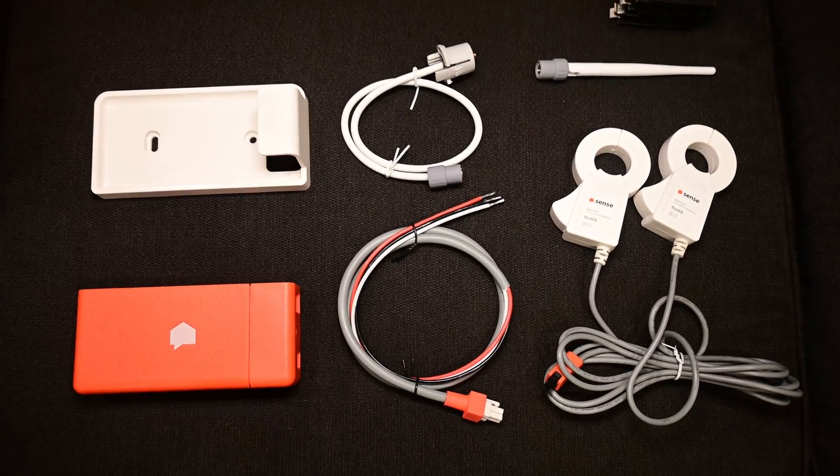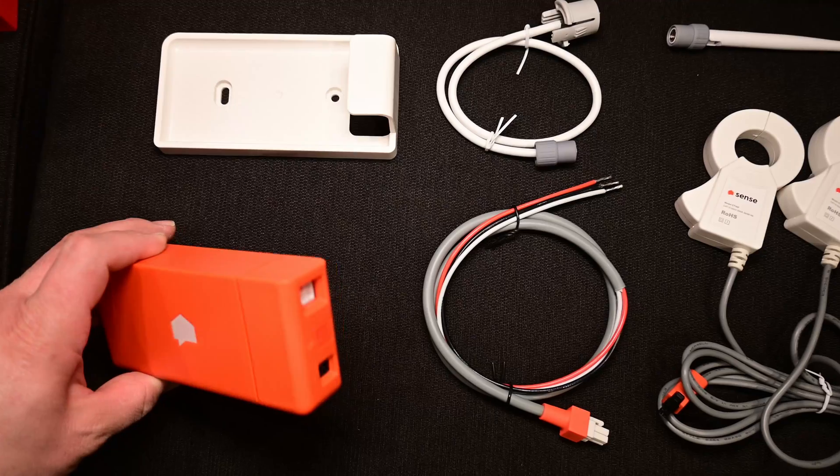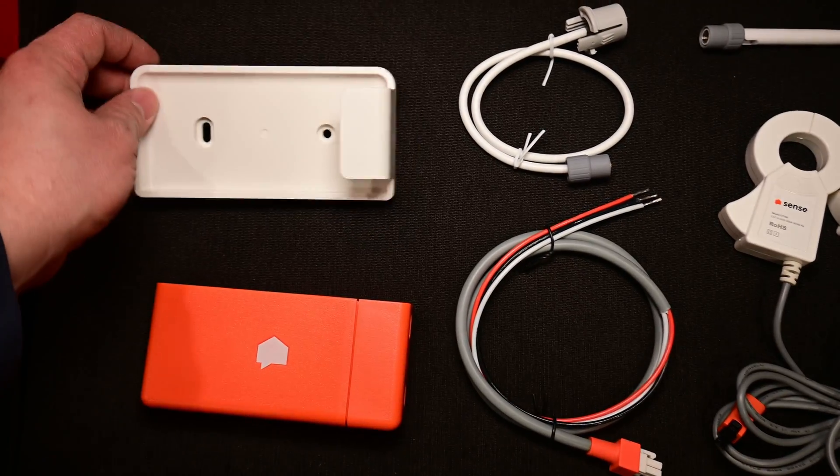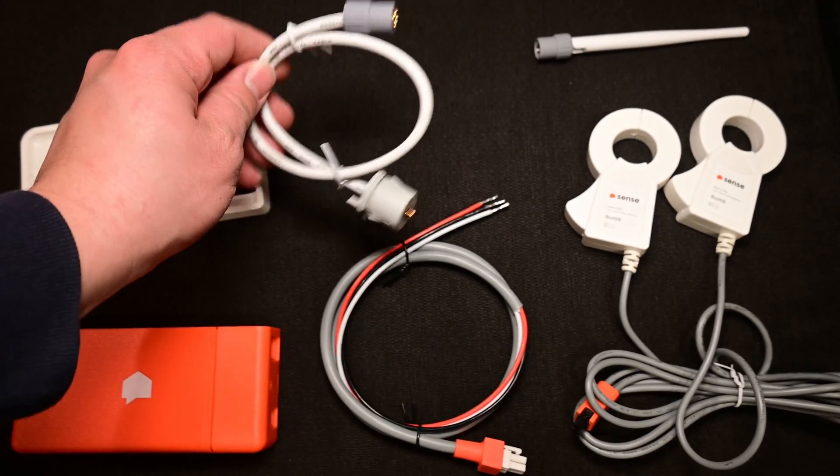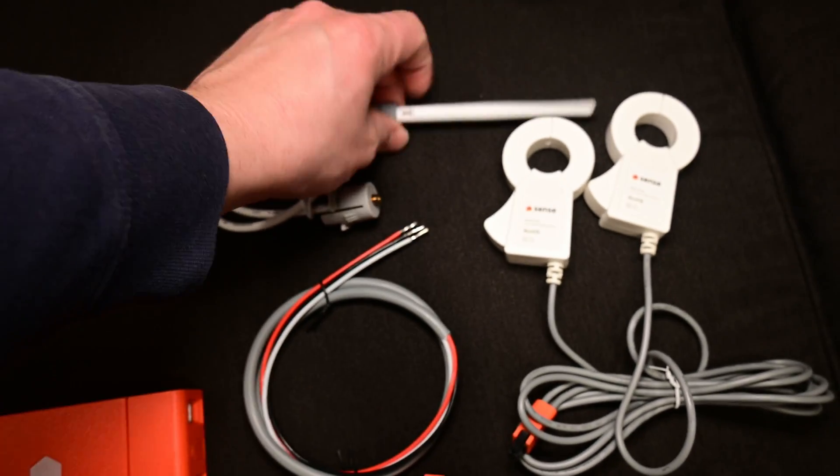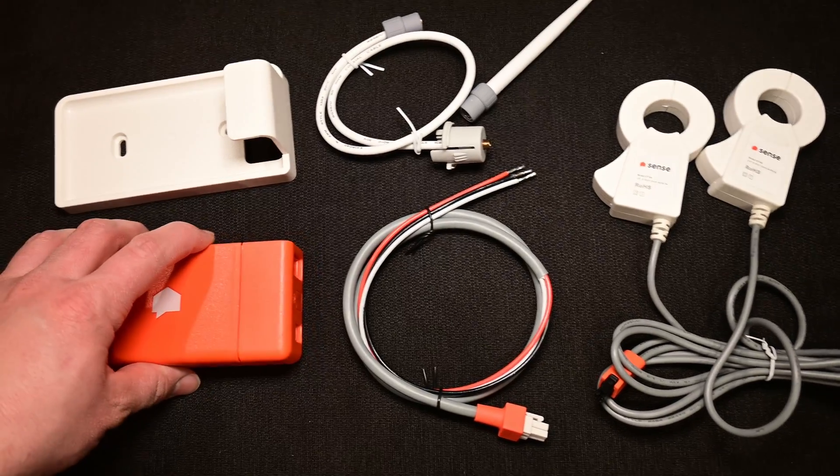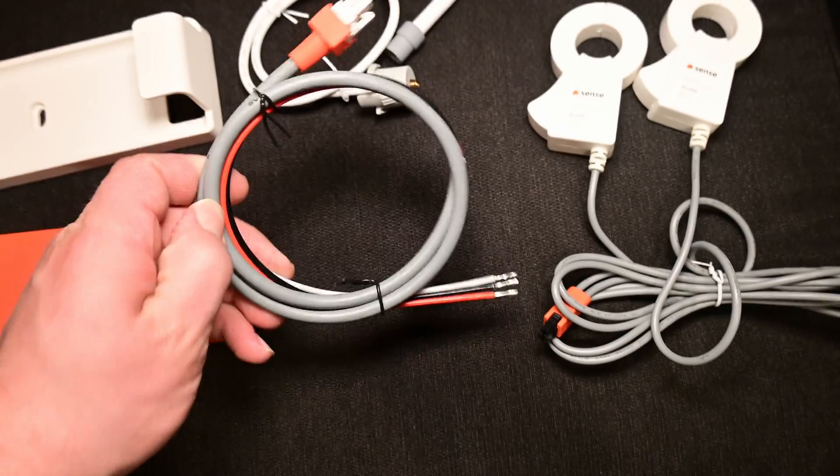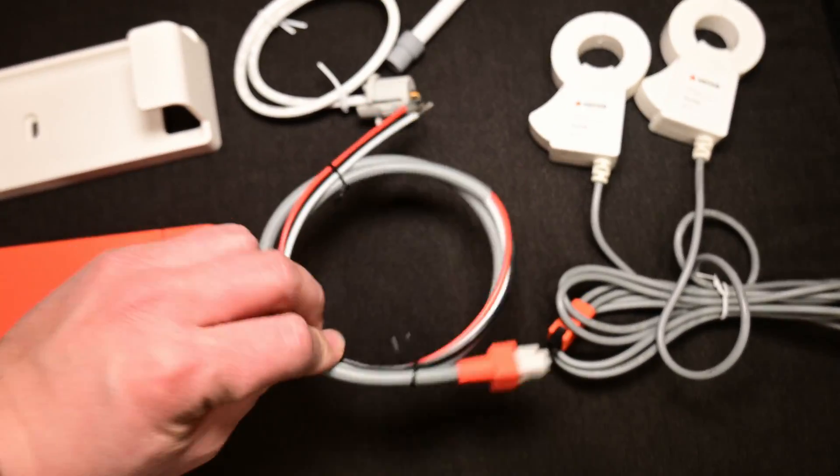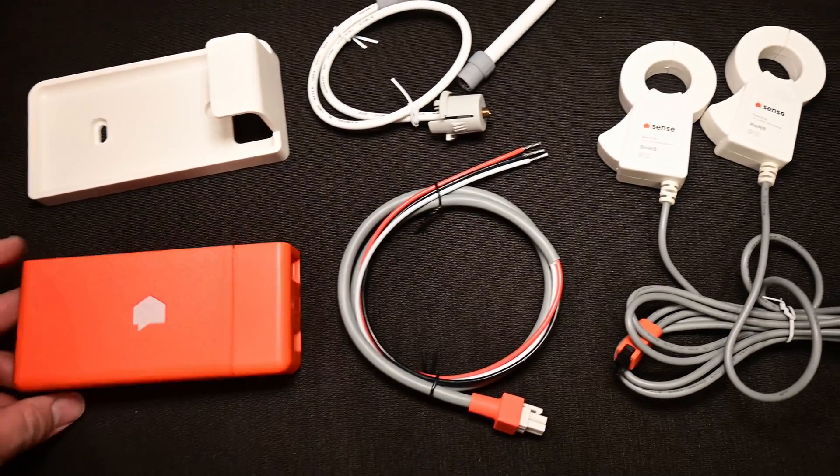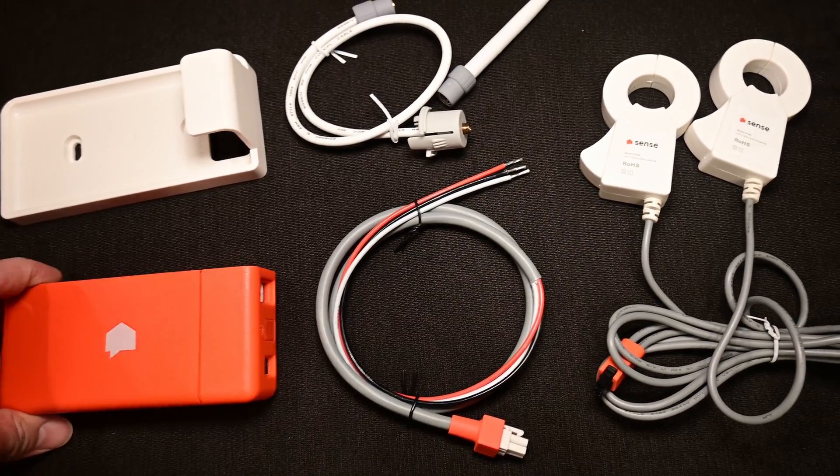These are the parts that are included with it. This right here is the Sense Energy Monitor itself, along with the mounting bracket that you will likely not need to use. Here is the connector for the extension of the antenna, which you're going to use so that your Sense Energy Monitor can connect to Wi-Fi. And then these are the power cables, which are going to allow the monitor to keep track of the current voltage of your power supply.